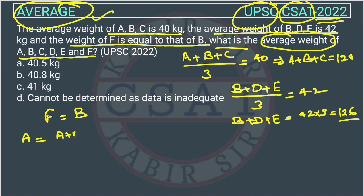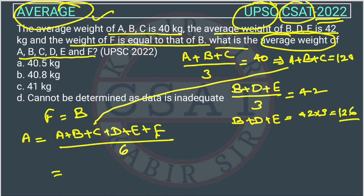All these items A plus B plus C plus D plus E plus F, upon how many items are there? 6. So, A plus B plus C we know from this equation. So, it will be 120.